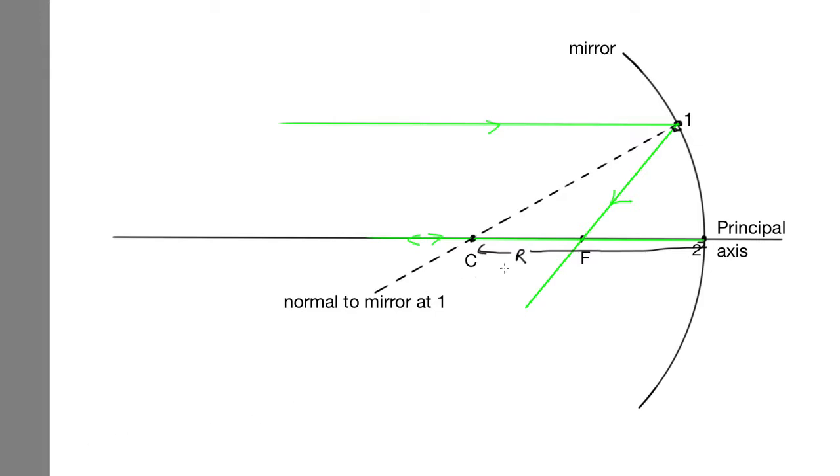So let's mark on what we know. We can call this angle of incidence, which is the angle between the normal and the incoming ray at 1, theta. Now, we know from reflection that the angle of incidence is equal to the angle of reflection.